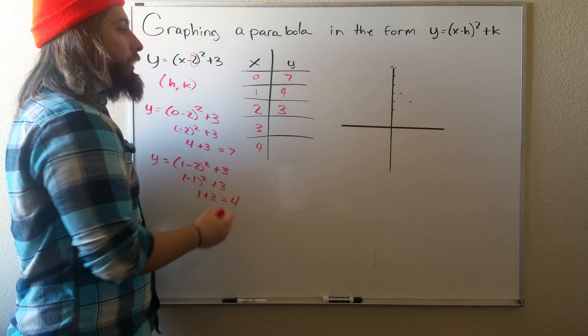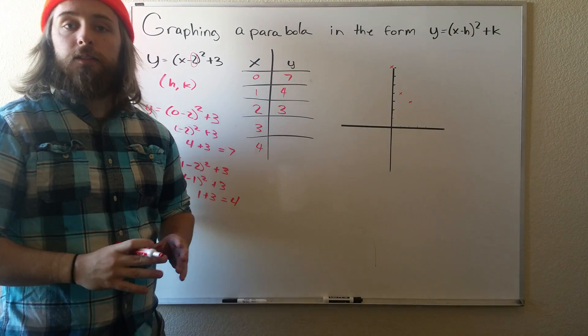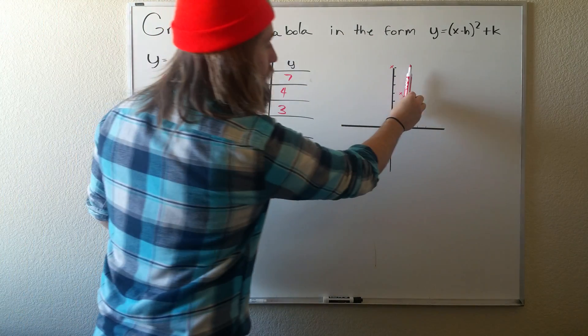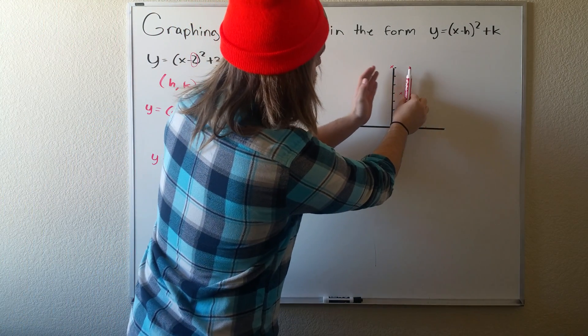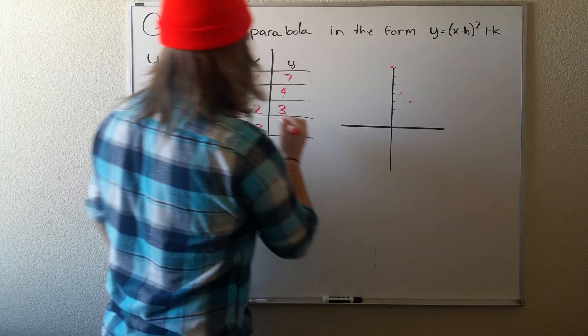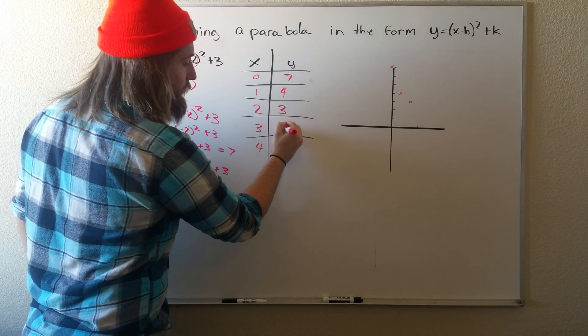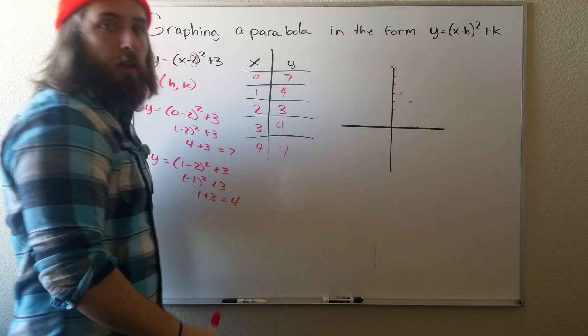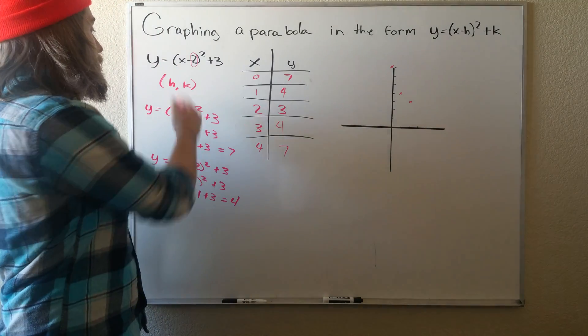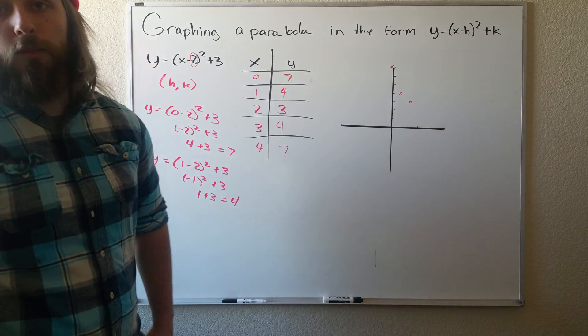For our last two, we know a parabola is actually symmetric. So what that means is across the vertex, it'll just flip over. So we don't have to do these two points. We can just write 4, 7. And if you want to check that, you can plug these numbers into that formula and you'll get the same thing.